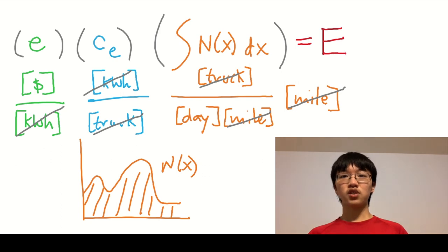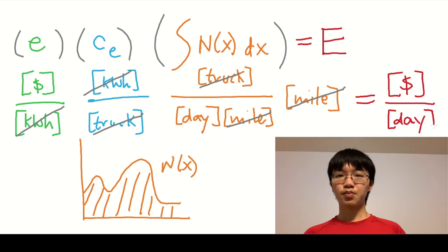Multiplying all these factors together gives us the dollars spent per day on recharging along the corridor. We call this big E.